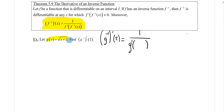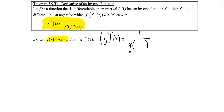You're given g, so you can find g prime quite easily by taking the derivative of that function. Inside the formula we're going to be plugging in g inverse of two. So what does g inverse of two mean?